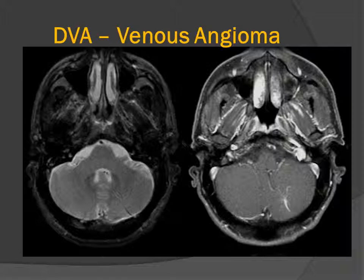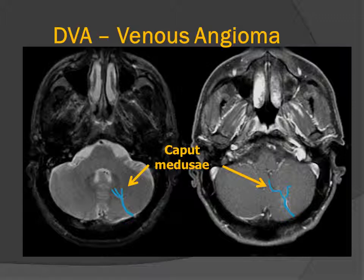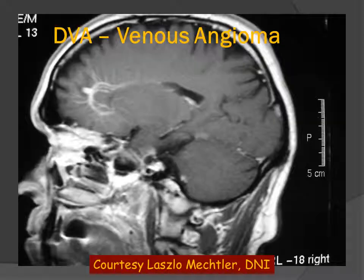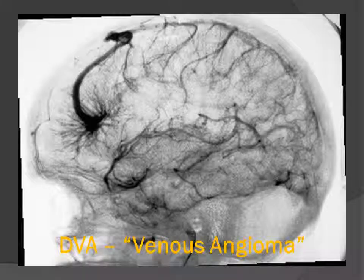Here is another example of a posterior fossa developmental venous angioma, or developmental venous anomaly. We have the caput medusa of multiple small collector veins and the dominant transcortical trunk, or transmantle vein. Here is another right frontal lobe DVA. We can see the small collector veins and the dominant transcortical trunk. In the sagittal image, we see the unique anatomy with multiple small veins collecting onto larger veins, and the larger veins connecting to the dominant transcortical or transmantle trunk.